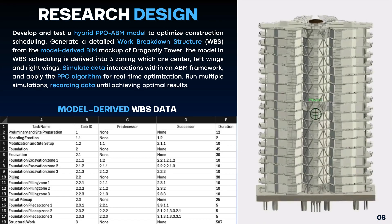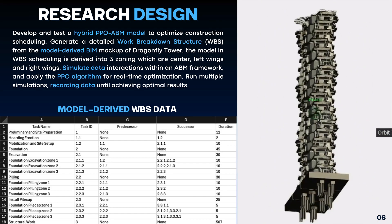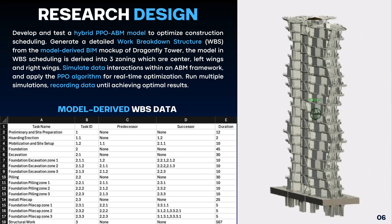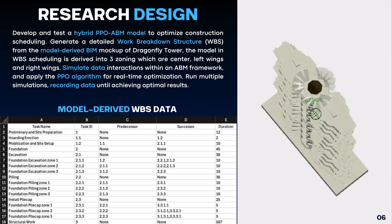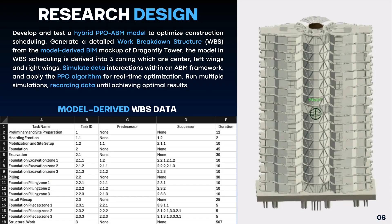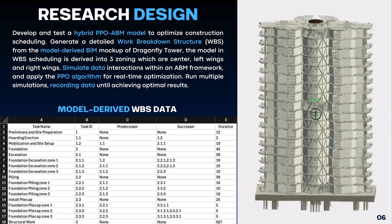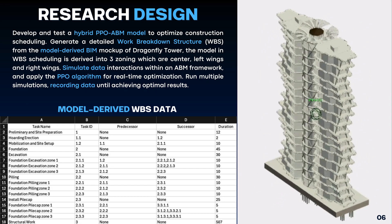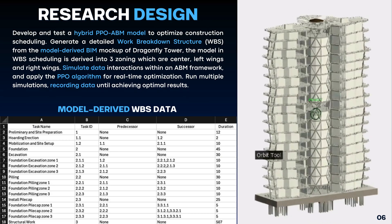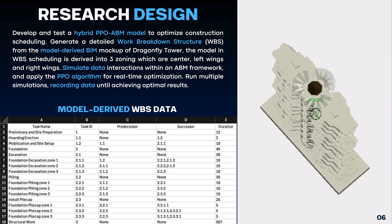This research is designed to develop and test a hybrid PPO-ABM model to optimize construction scheduling using work breakdown structure data from the Dragonfly Tower mock BIM model. Simulated with Python, agent-based modeling managed data interactions, while the PPO algorithm optimizes schedules in real-time. Iterative simulation refines the data to achieve optimal scheduling outcomes.